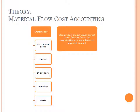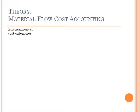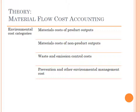The non-product output, which is of interest here, is defined as any output which does not leave the organization as a manufactured physical product. All these inputs and outputs have associated costs. The environmental cost categories of the method are: material costs of product outputs, material costs of non-product outputs, waste and emission control costs, prevention and other environmental management costs, and research and development costs.